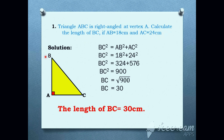Let's see the solution. Here I have taken a triangle to understand. According to the Pythagoras theorem, BC square is equal to AB square plus AC square. We have to write BC square as it is because we don't know the value of BC. AB is equal to 18 cm.